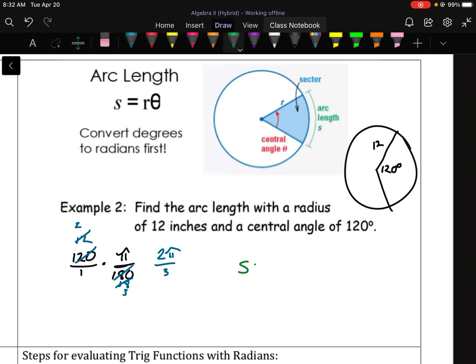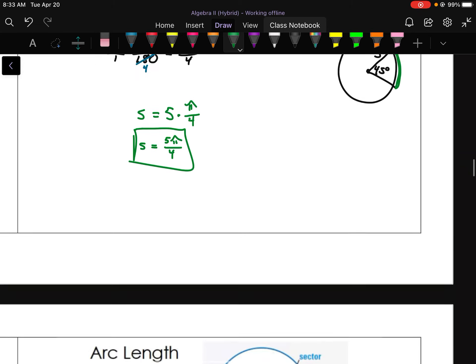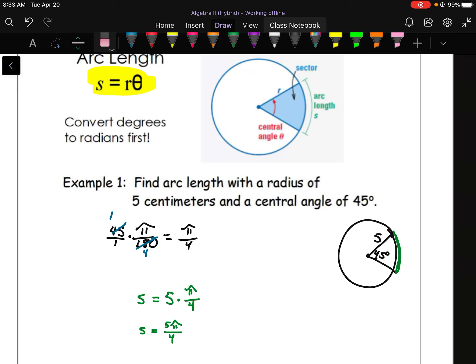So to find the arc length S, take your radius 12 times your angle in radians, 2π over 3. And then, so if we multiply across here, we will end up with 24π over 3. And if you simplify that, your arc length is 8π. And I guess I should, I was given a unit of measure, so I should use a unit of measure. So 8π inches. So the other one then would have been 5π over 4 centimeters because I was given that unit of measure.